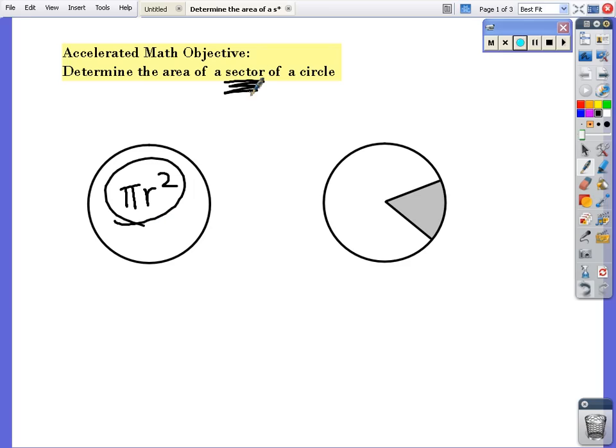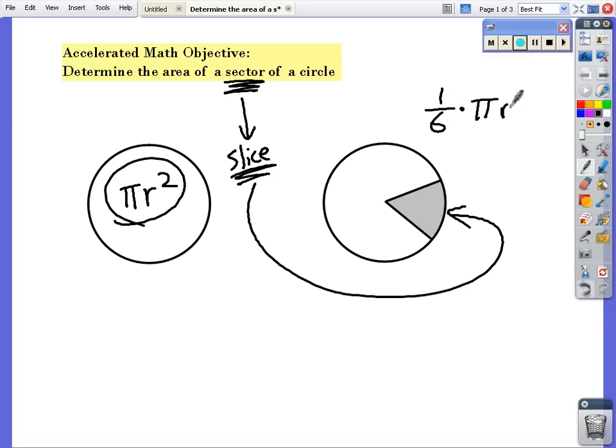If you want to talk about a sector, a sector is a fancy or mathematical word for saying pizza slice. So a sector in a circle is a slice of that circle. As you can see here, we've got a slice. If you wanted to find out the slice of a circle, it's a portion of πr². This pizza slice looks like about a sixth of that whole circle, so that would be 1/6 times πr².